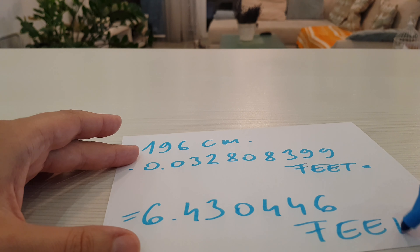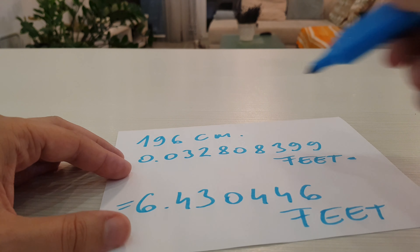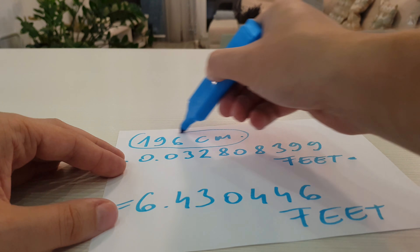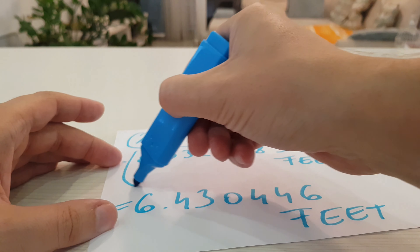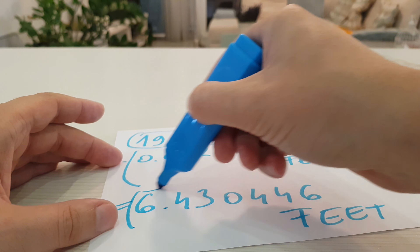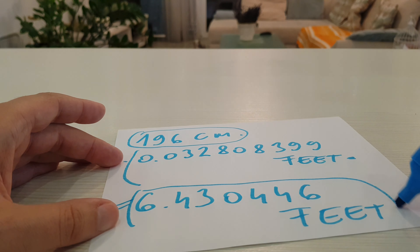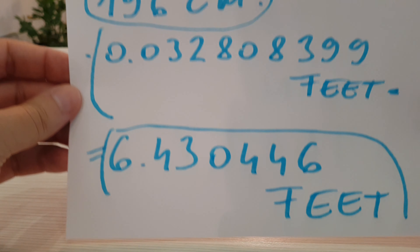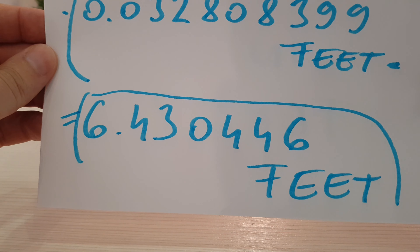Here is the solution again: 196 cm equals 6.430446 feet.